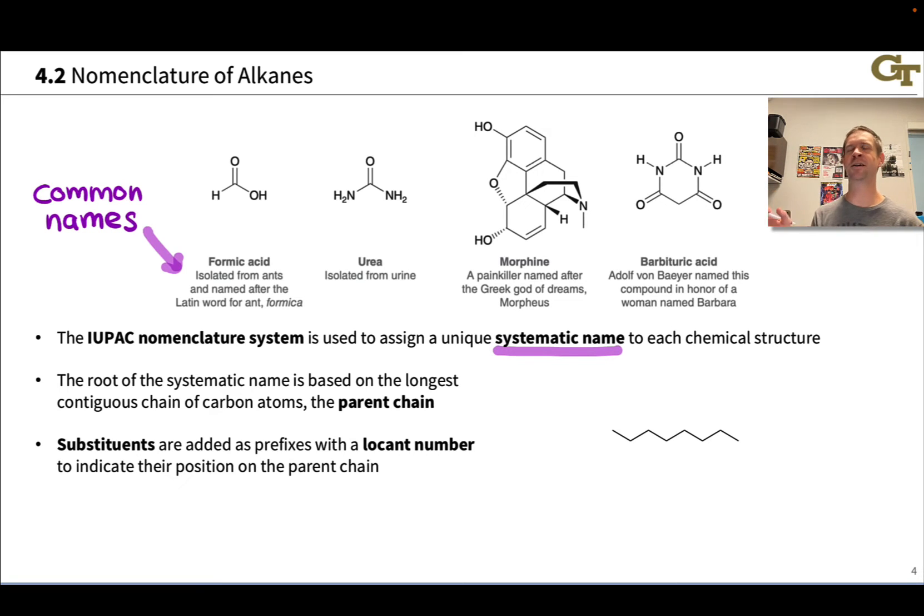And the idea here, as we study IUPAC nomenclature, is not to memorize the rules and not to robotically apply these rules, but really to learn to see organic molecules, again, as a saturated hydrocarbon skeleton decorated with functional groups. And the IUPAC nomenclature system is based on this fundamental way of seeing organic compounds. It starts with the root of the name, which is based on the longest contiguous chain of carbon atoms in the compound. This is known as the parent chain. And there are many simple alkanes that have only the parent chain. All of the carbons can be thought of as contained within the parent chain.